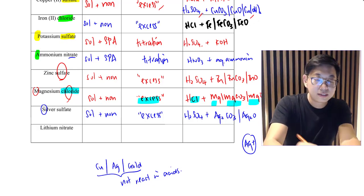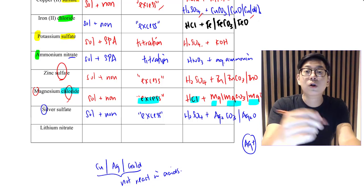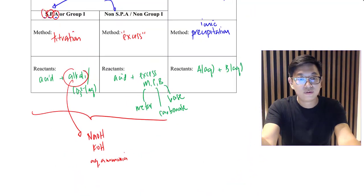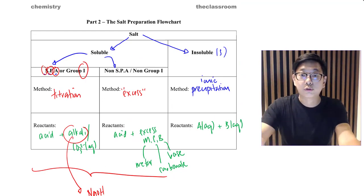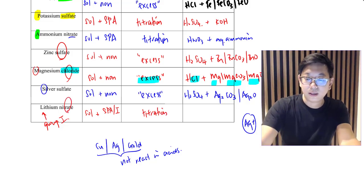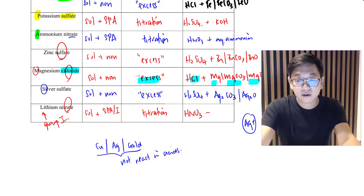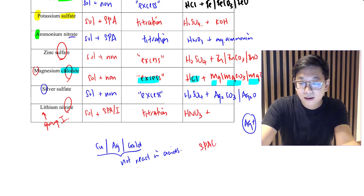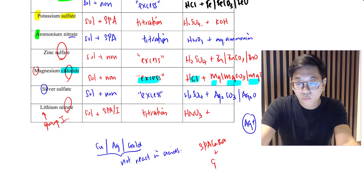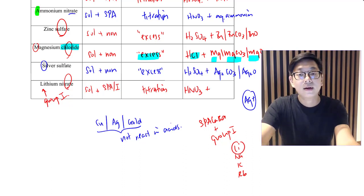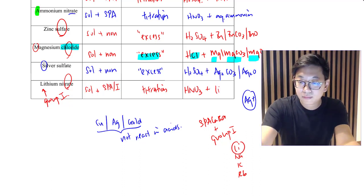For lithium nitrate — this is a bit of a trick question. It's not SPA, but it's group 1. Referring to the flowchart: if it's SPA or group 1, we use titration. So it is soluble and group 1, and we use titration. The acid is nitric acid (HNO₃) because it's a nitrate. For the alkali, since lithium is a group 1 element and group 1 hydroxides are soluble, we use lithium hydroxide.